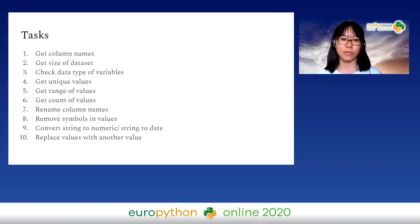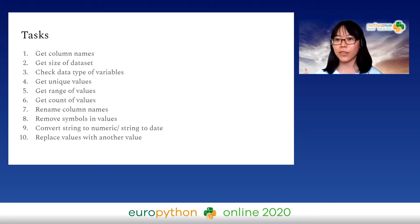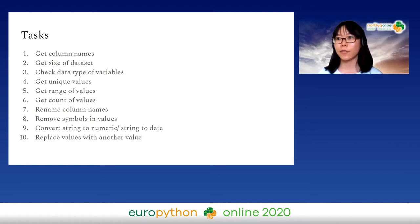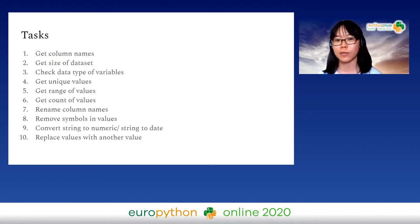Pandas is smart — for example, if a variable contains strings it detects it as an object; integers or floats are detected accordingly. But in certain cases it can go wrong, which is why we check whether the data types are correct. Next, we want to understand the unique values for each variable — this is one way to identify unclean data.